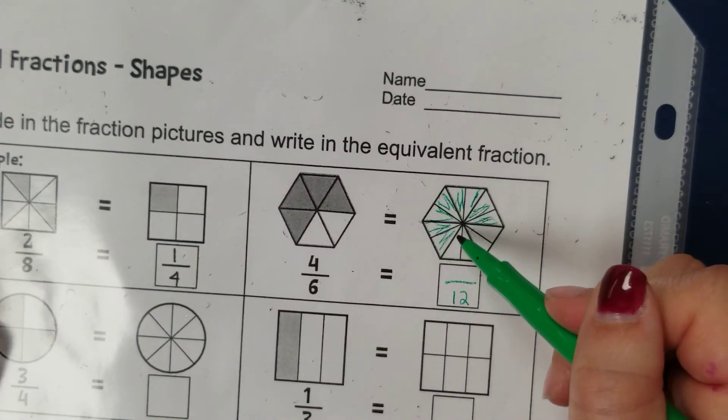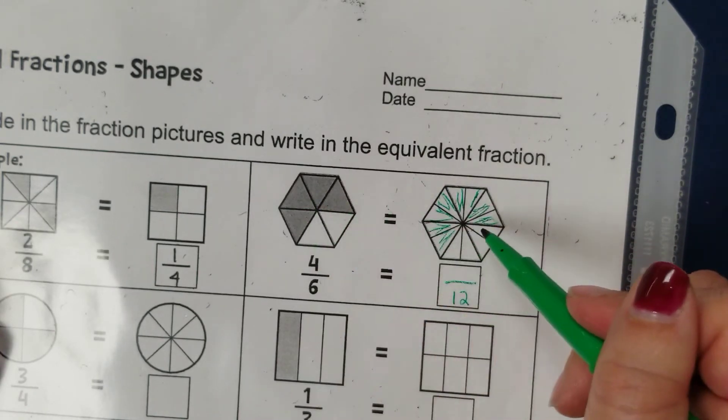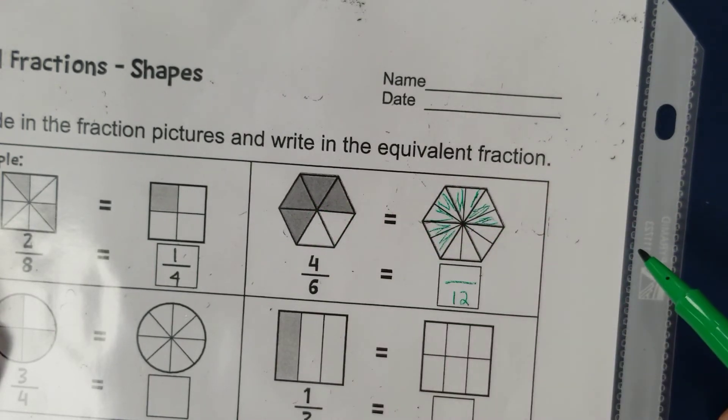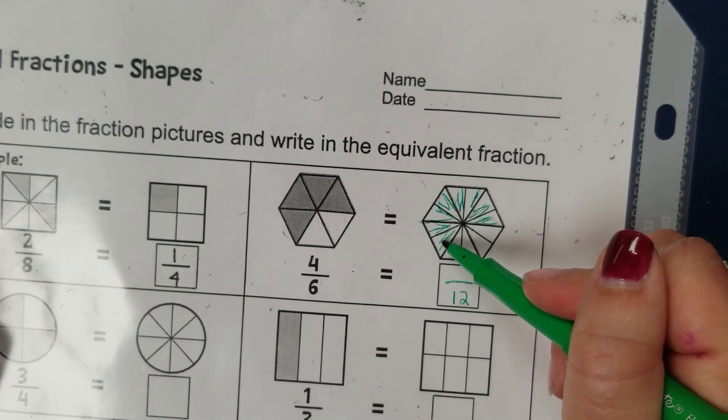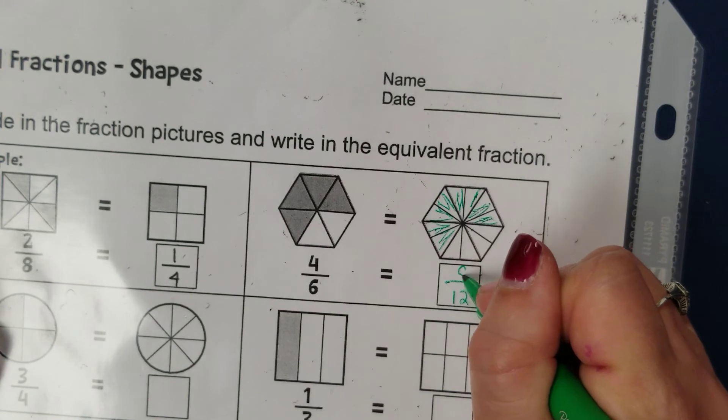Then I want to count how many shaded parts there are. Same amount is shaded as in this first shape so I'm going to count one, two, three, four, five, six, seven, eight shaded parts.